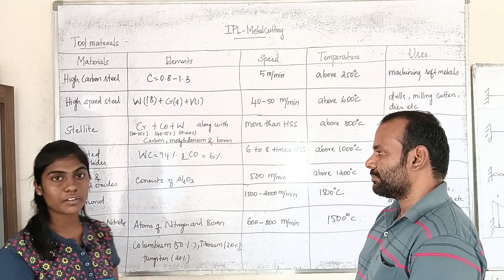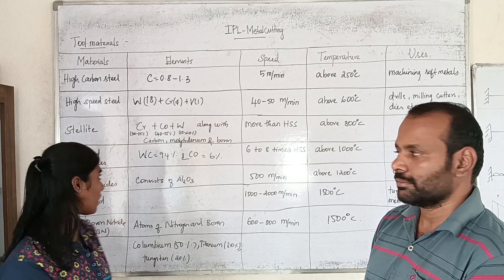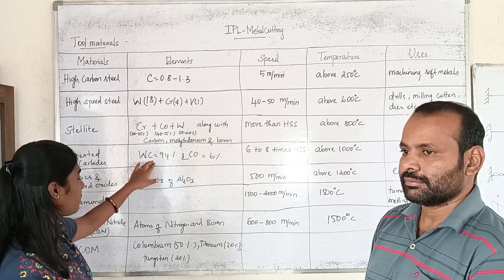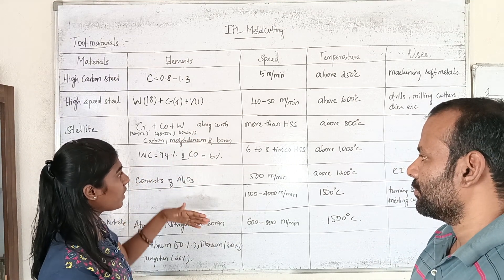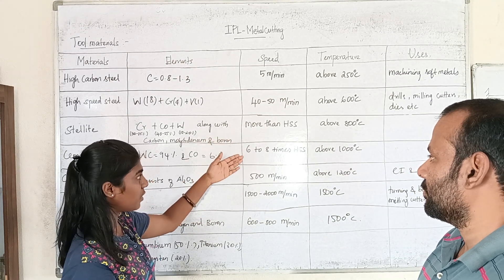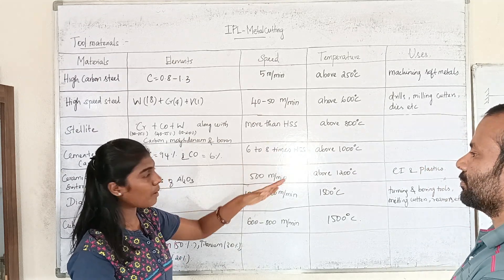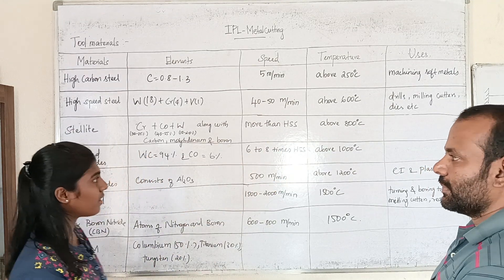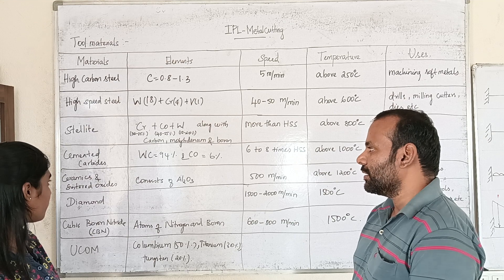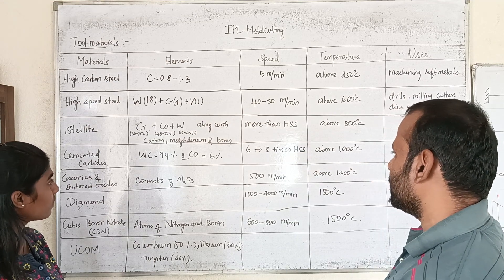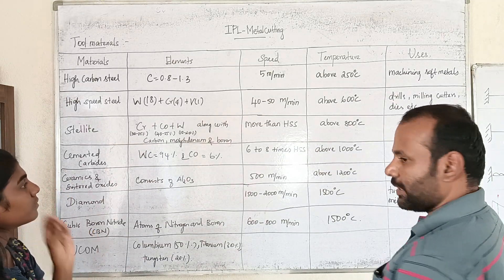This is cemented carbides. Cemented carbides are made using powder metallurgy. We use cobalt as the binder. Tungsten carbide content is 94%. The temperature is higher, approximately 1000 degrees Celsius.